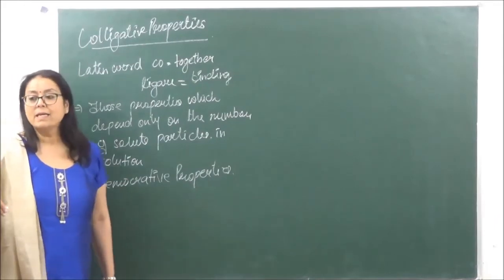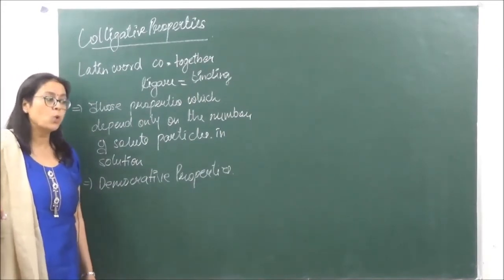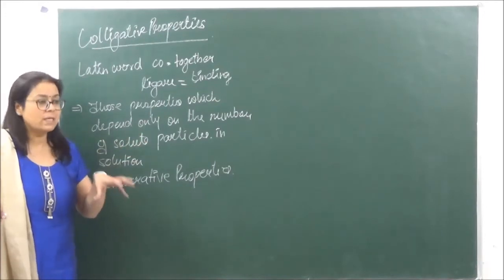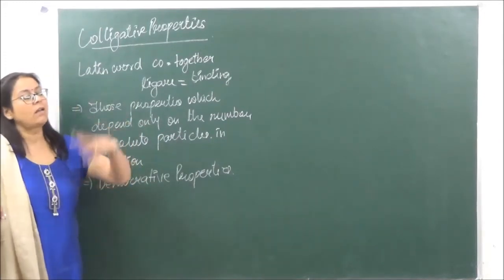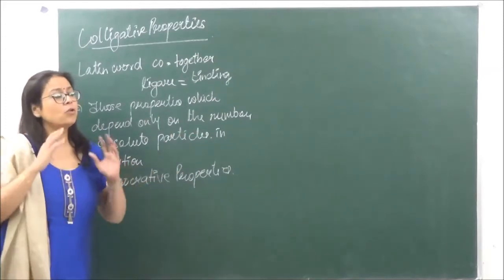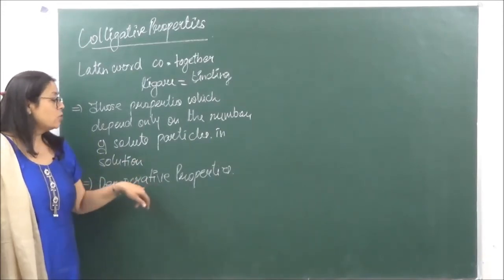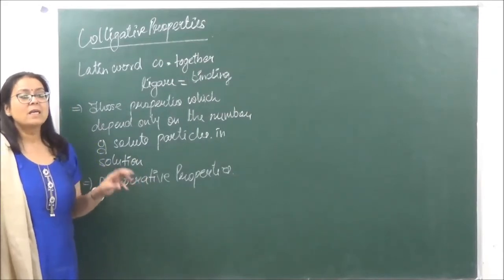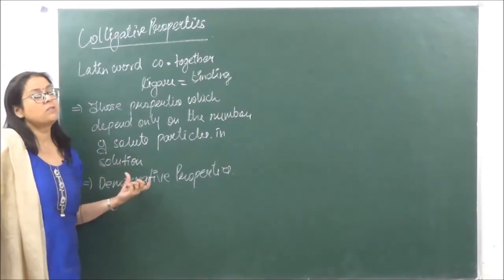The analogy for 'democreative' is like democracy in a country — a party wins by the number of votes it gets, not by the nature of the voters (their race, size, etc.). Similarly, colligative properties depend only on the number of solute particles, not on the nature or size of those particles.